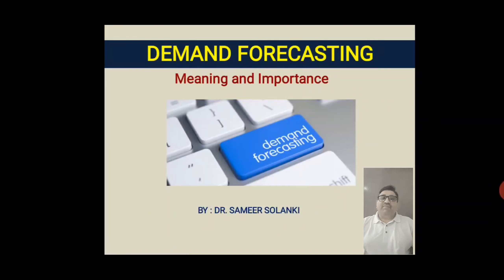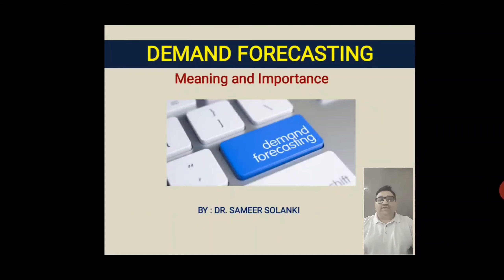We produce something so that we can satisfy the needs, wants, and demand of the market. For example, once we have decided to produce a certain product and have decided about our production process, we need to think about how much quantity we are able to sell in the near future. Based on our expectation to sell, we can plan for production and other finance-related activities. This is where the role of demand forecasting comes in.